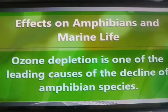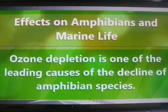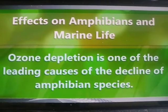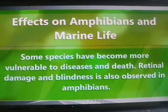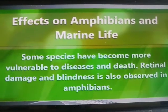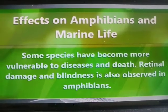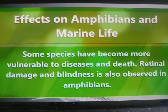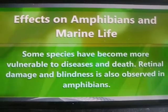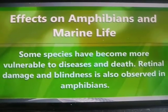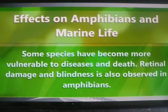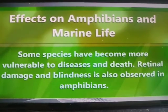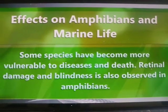Effects on amphibians and marine life: For those present in water bodies, ozone depletion is one of the leading causes of the decline of amphibian species. Some species have become more vulnerable to diseases and death. Retinal damage and blindness is also observed in amphibians. UV radiation can decrease the dissolved oxygen in water, harming aquatic animals. Aquatic animals face a deficiency of dissolved oxygen and as a result are dying.